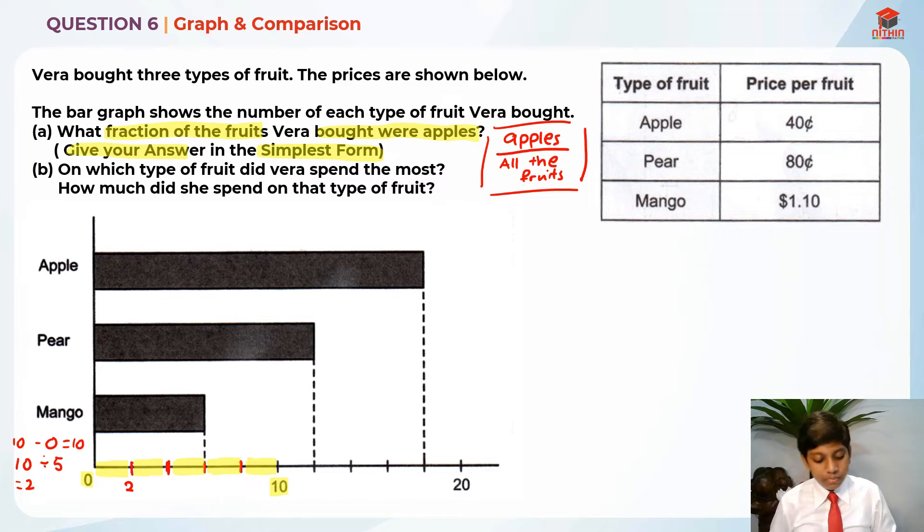Basically, the first line represents two. So the rest of them is just the two times table. So two, four, six, eight, ten, twelve, fourteen, sixteen, eighteen, and twenty.